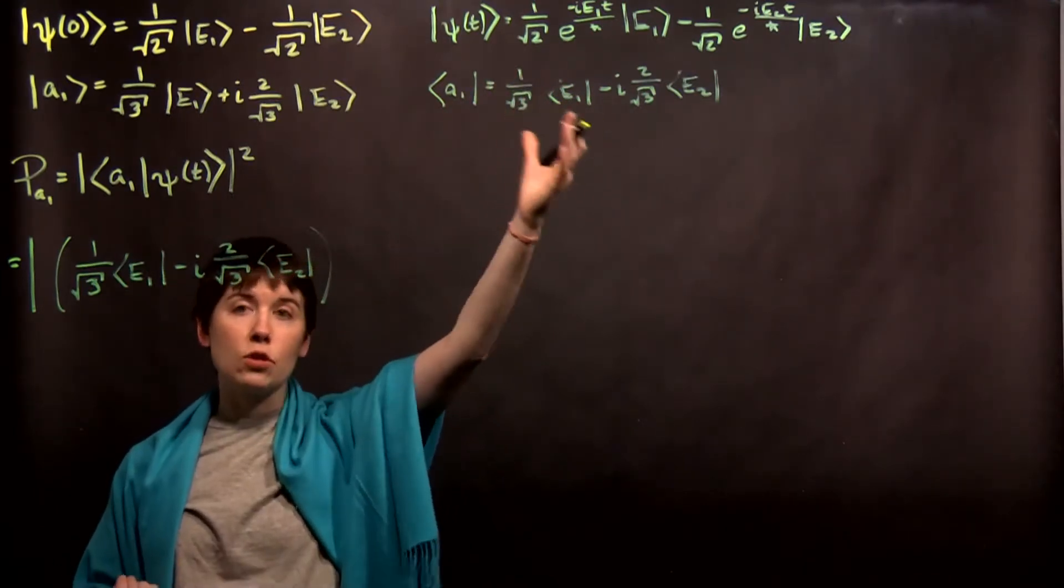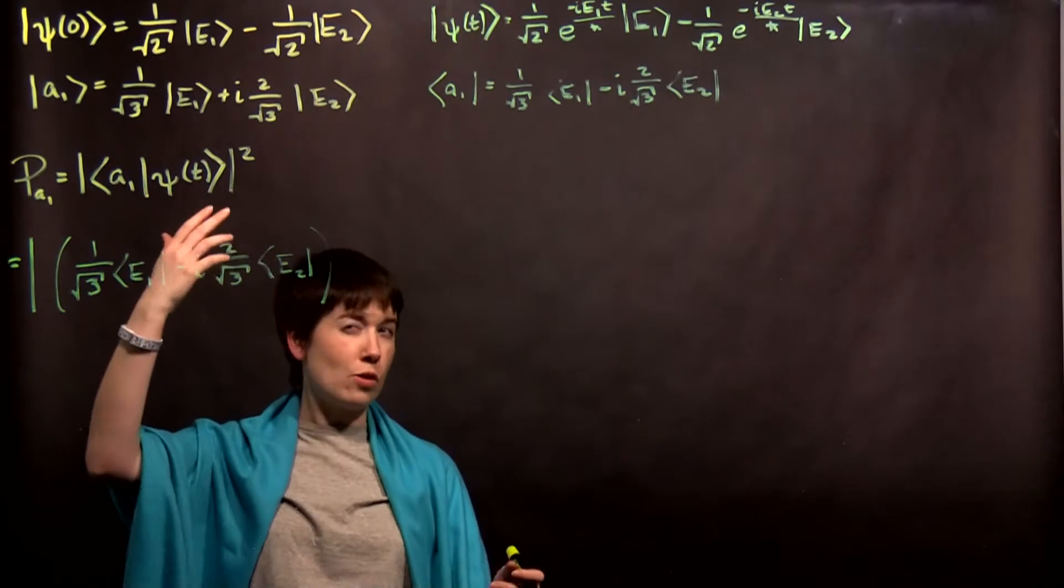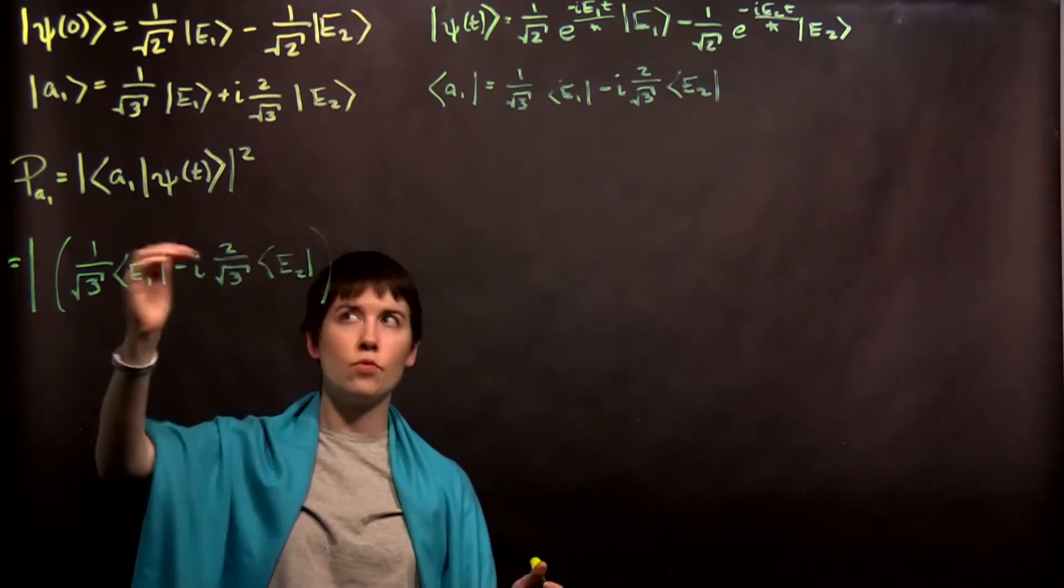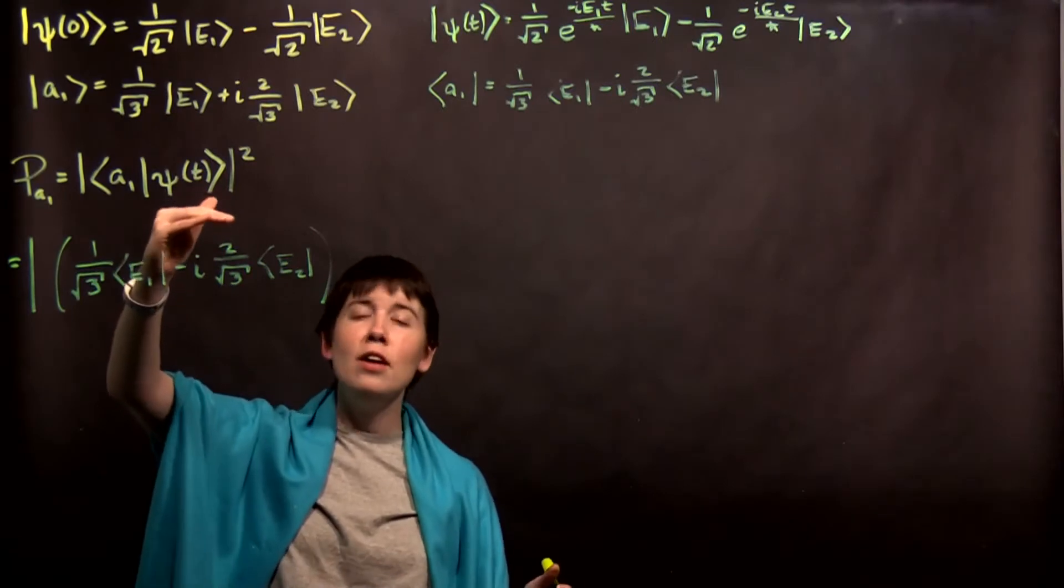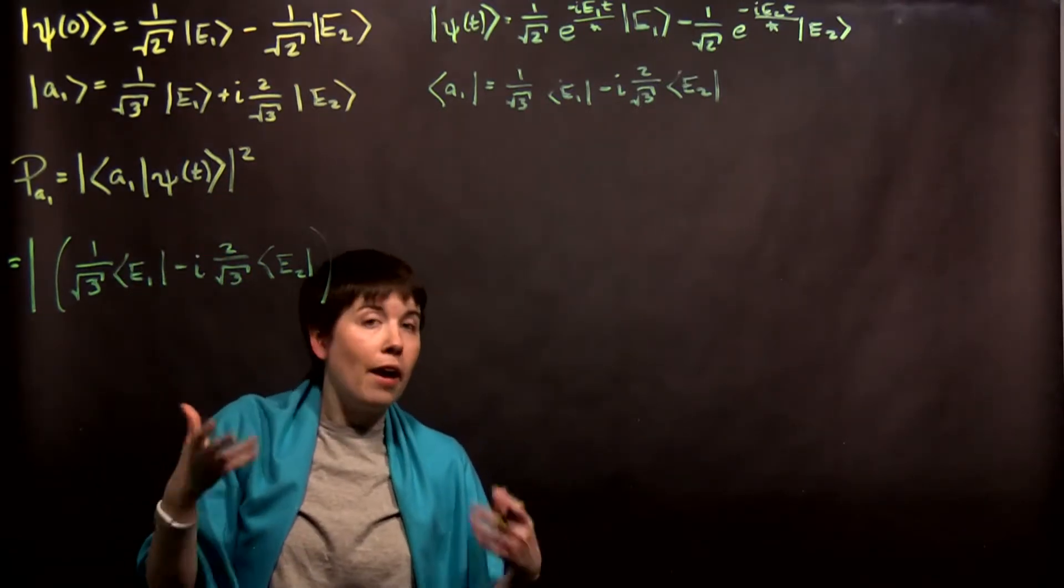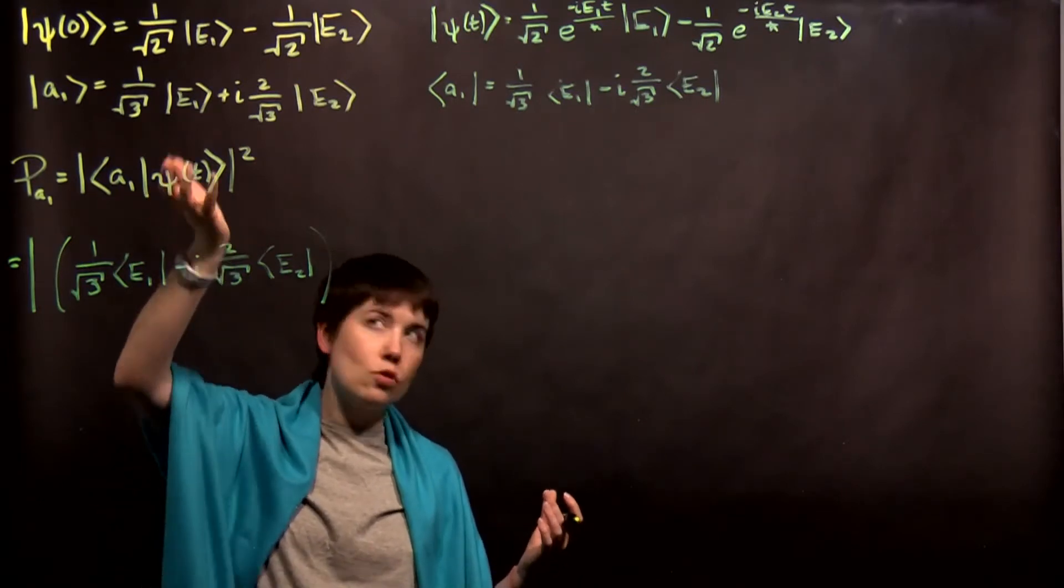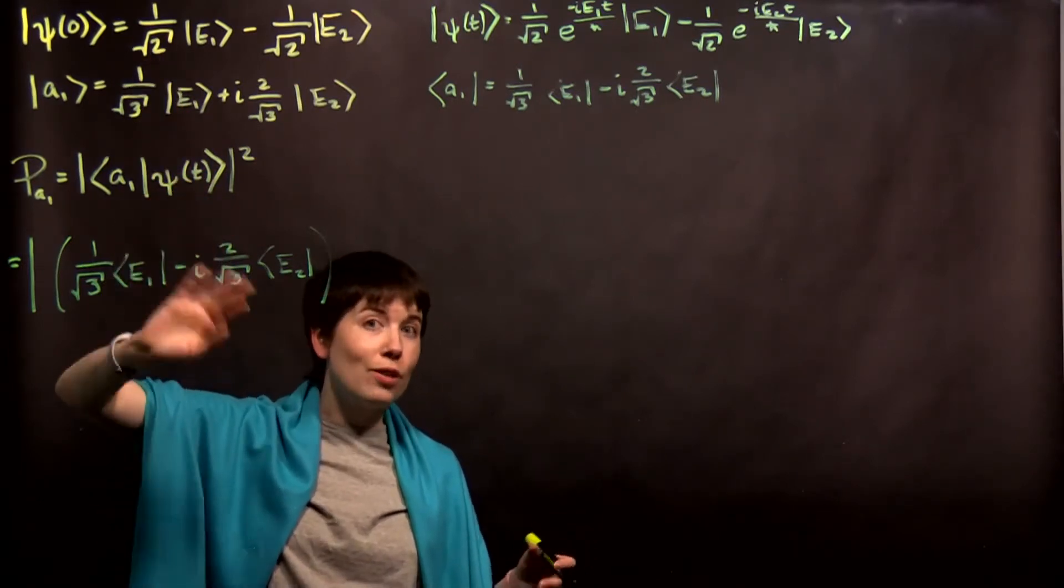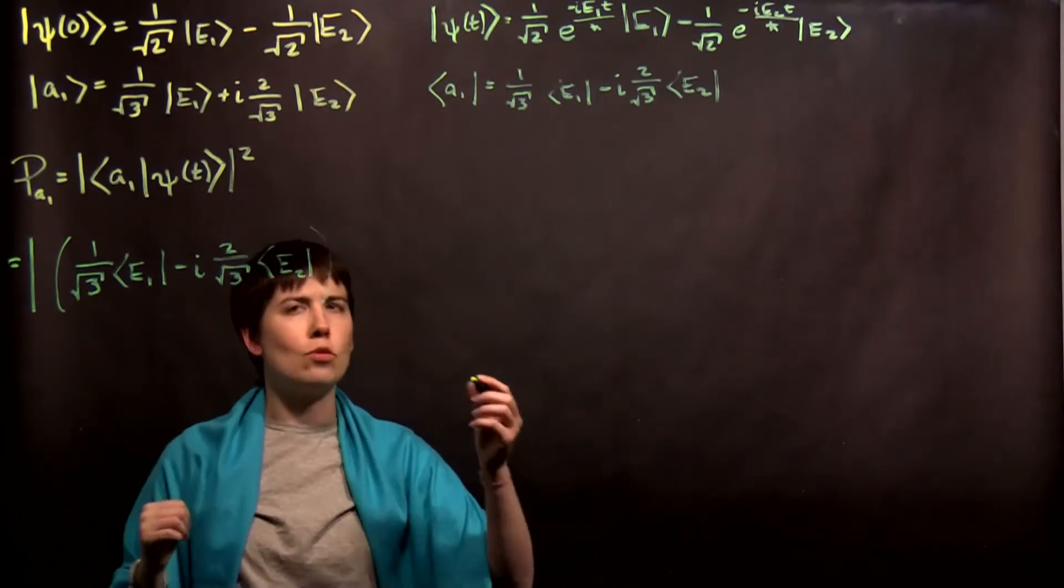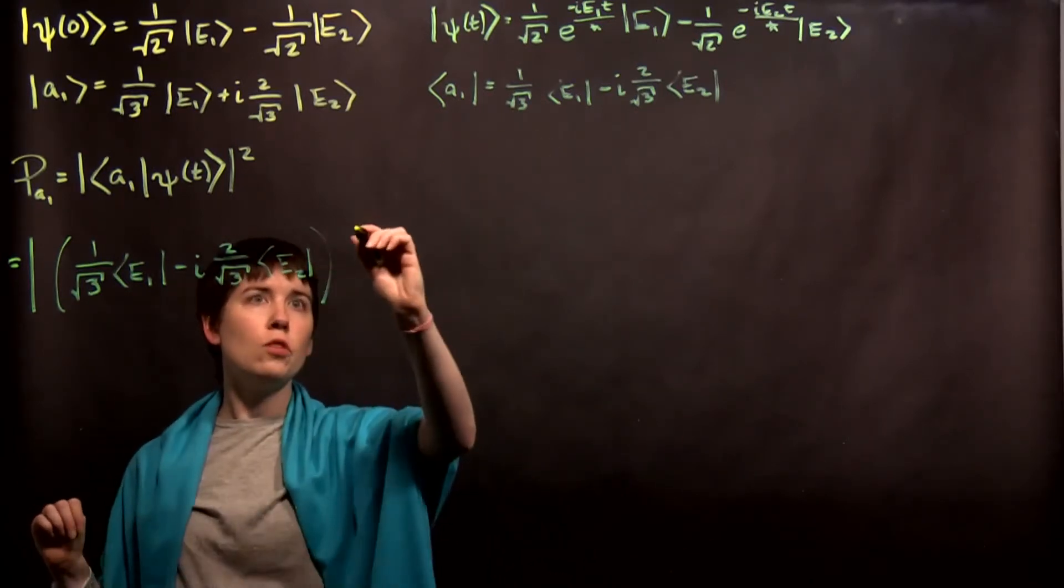And again, you need to actually bring down the time dependence. You can't calculate your initial probability and then add time dependence later. You need to introduce time dependence from the beginning. You want to write it this way. If you were only asked the question, what's the probability at the beginning at t equals zero? Okay, then you can just use this term here. However, we can also calculate it in general with time dependence and then later plug in t equals zero. That's valid.